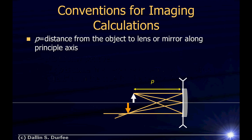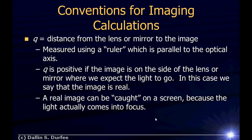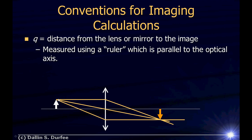For a mirror, P is the distance from the object to the mirror surface measured parallel to the optical axis. Q is the distance from the lens or mirror to the image formed, also measured parallel to the optical axis. Q is positive when the image is on the side of the lens or mirror where the light actually goes. In this case, the image is real — a real image can be caught on a screen because the light actually comes to a focus there.